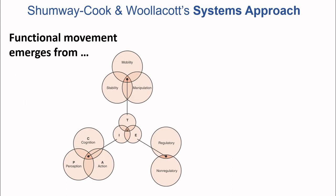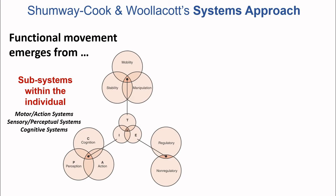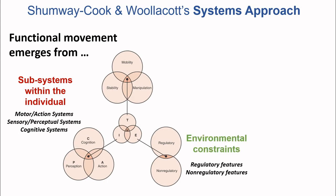We can look at each of these in turn. First, we have subsystems within the individual. When I took you through the foundations of postural control and mobility, we first looked at action, then perception, then cognition. We'll be doing the same with the foundations of mobility through this first lecture. In the case of environmental constraints, we have regulatory features and non-regulatory features. And finally, we have the attributes of the task.